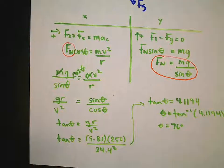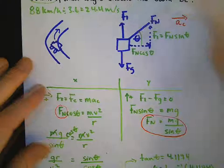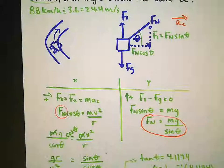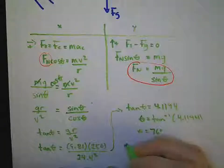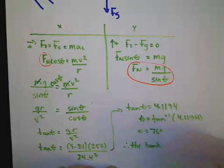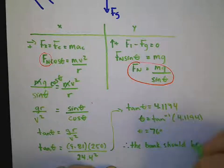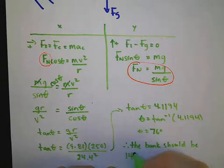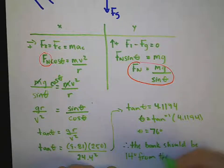Now let us look back just briefly. This is 76 degrees above the horizontal. We like our angle measurements to be lower than 45 degrees. So therefore, the bank should be 14 degrees from the vertical.